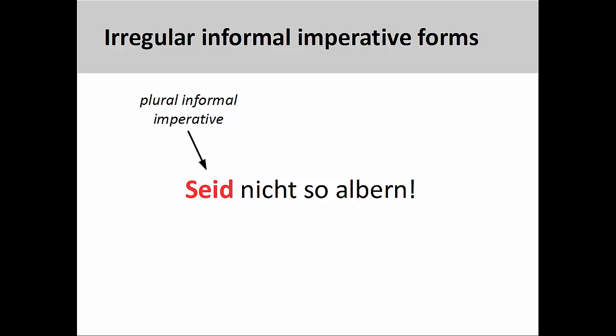Finally, as we have seen in the prior presentations, the imperative form of sein, meaning to be, is also irregular in the plural informal imperative. For example, Seid nicht so albern. Don't be so silly.